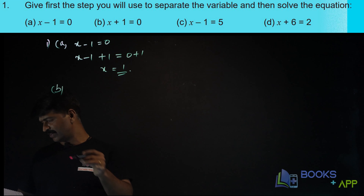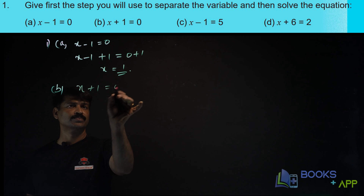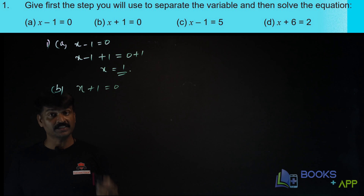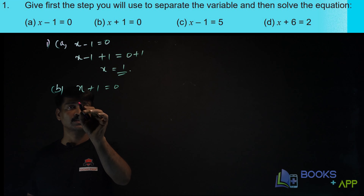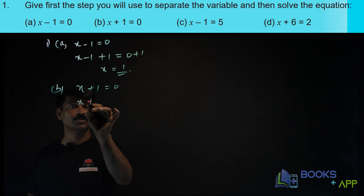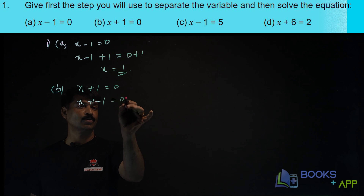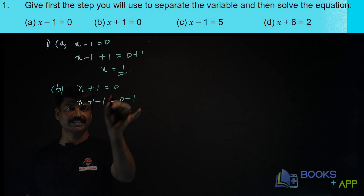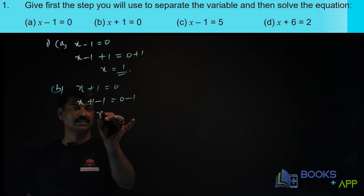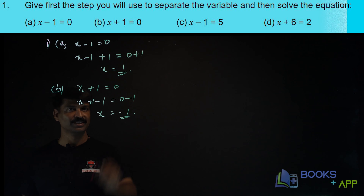Now let us solve the second one: x plus 1 is equal to 0. What is the first step you have to do? You have to remove this plus 1 from here. So what you have to do? You have to subtract 1 here, and here also you have to subtract 1. So 1 minus 1 gets cancelled, and x is equal to minus 1. That is the solution.